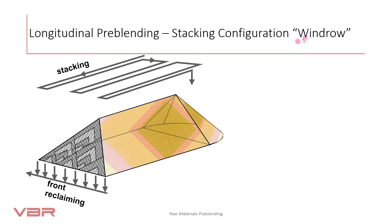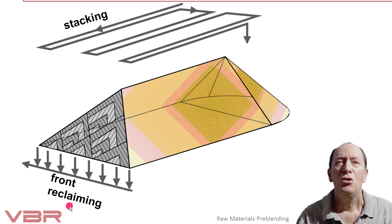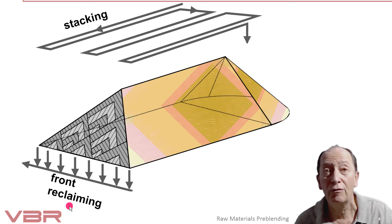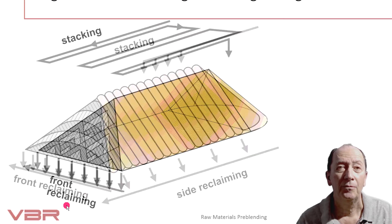Another stacking method is the so-called windrow stacker. Several longitudinal layers are stacked parallel over the whole width of the pile in such a way that they form a triangle after completing the full height. In other words, the stacker makes both longitudinal and transversal movements, forming a pattern of different rows. Reclaiming is always done with a front reclaimer system. The investment costs are surely higher compared to the simpler chevron system, so where and why would the windrow system be applied? Think about it.